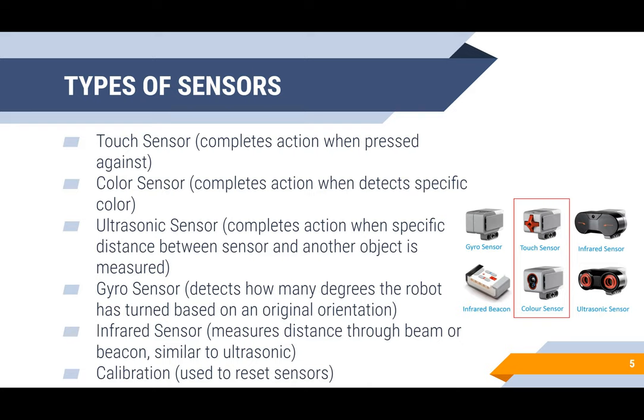There are many different types of sensors. One is the touch sensor, which completes an action when pressed. There's the color sensor, which completes an action when it detects a specific color. There's the ultrasonic sensor, which completes actions when a specific distance between the sensor and another object is measured.